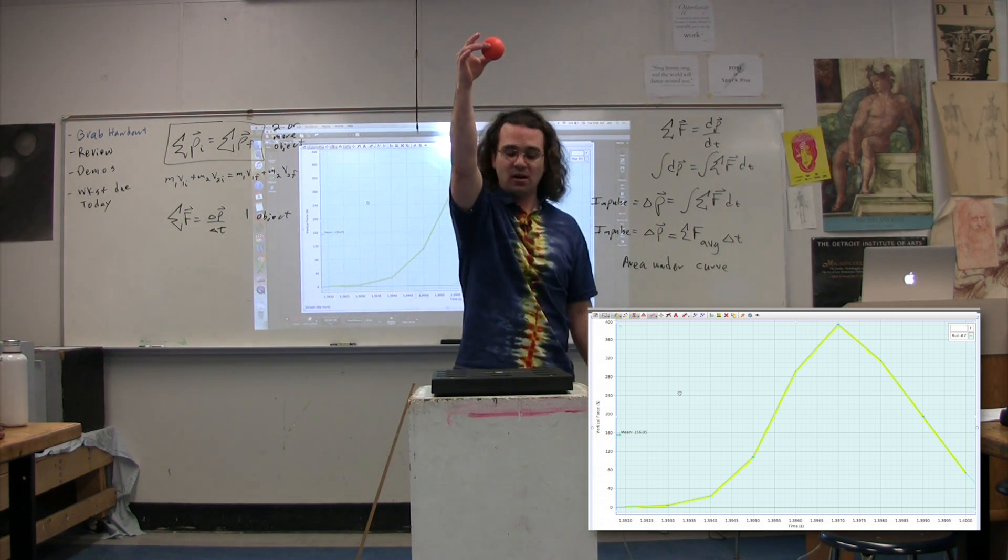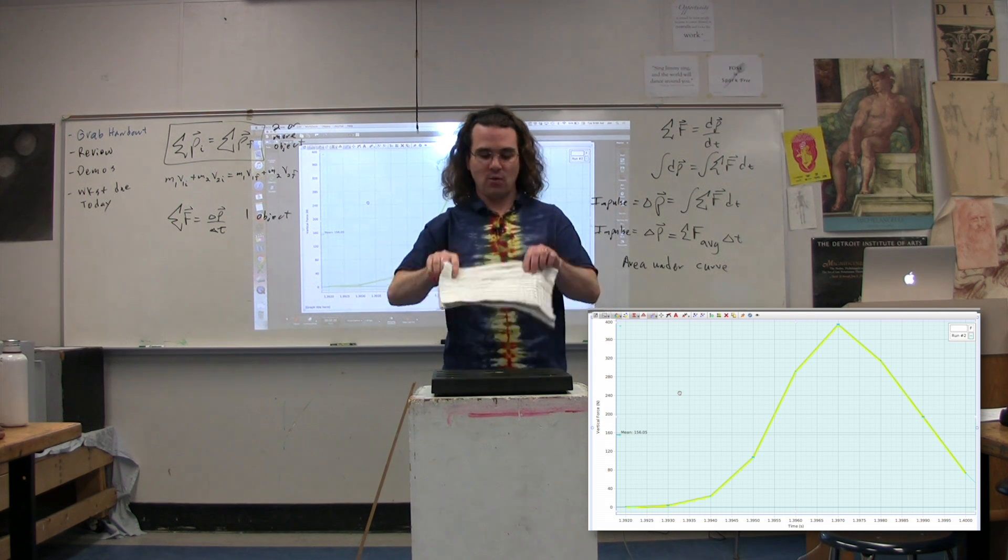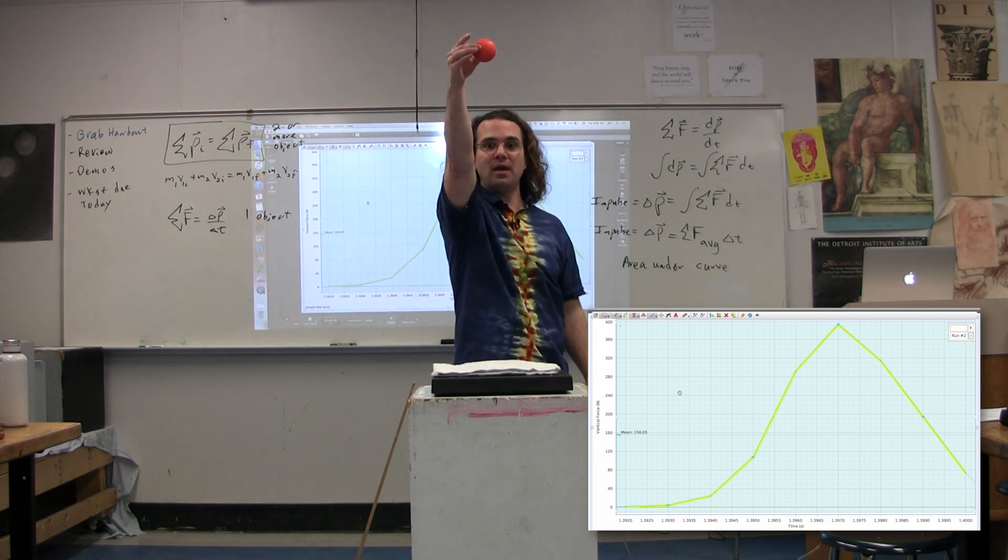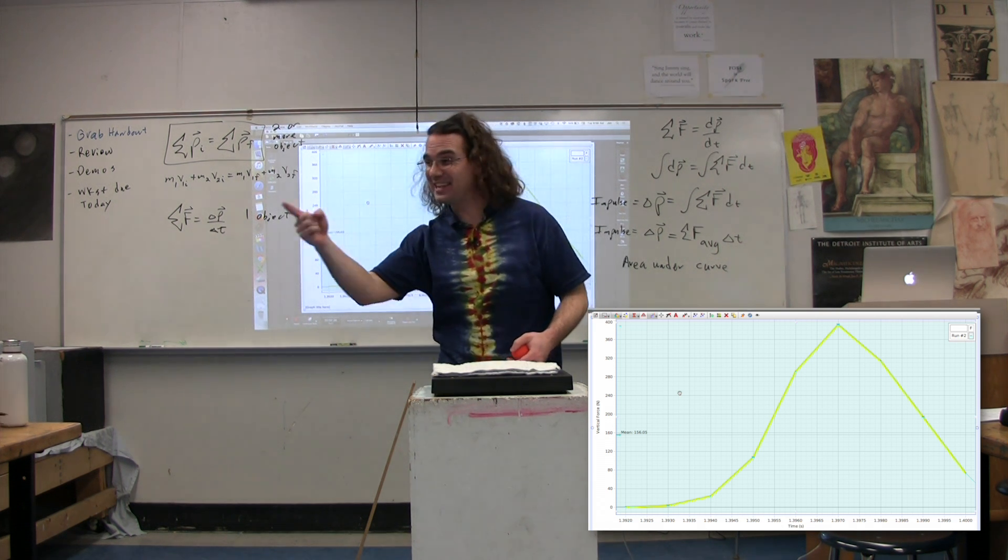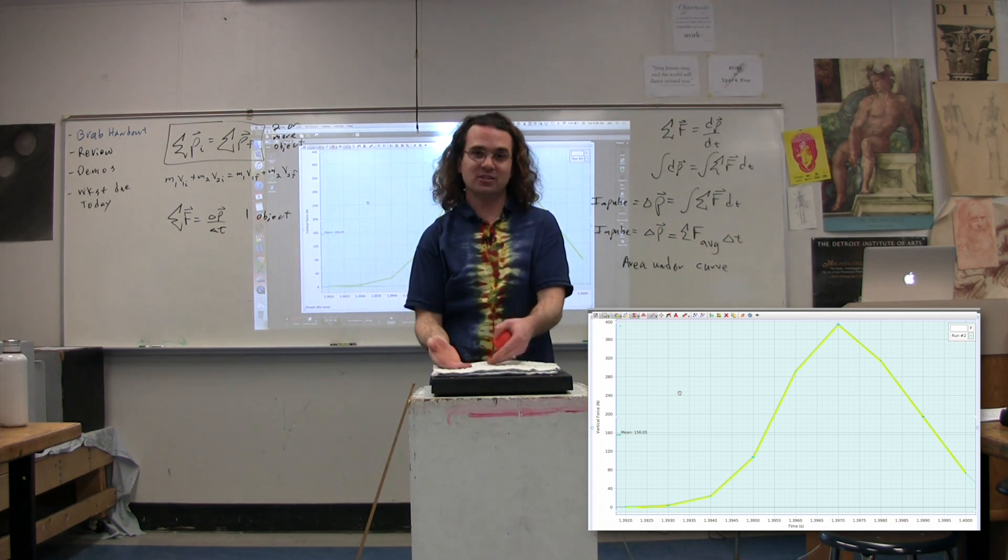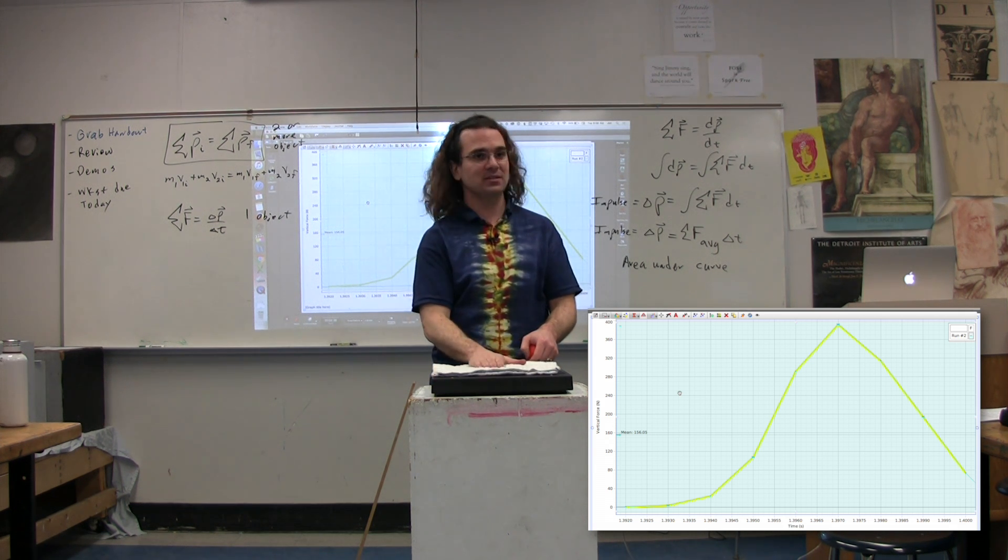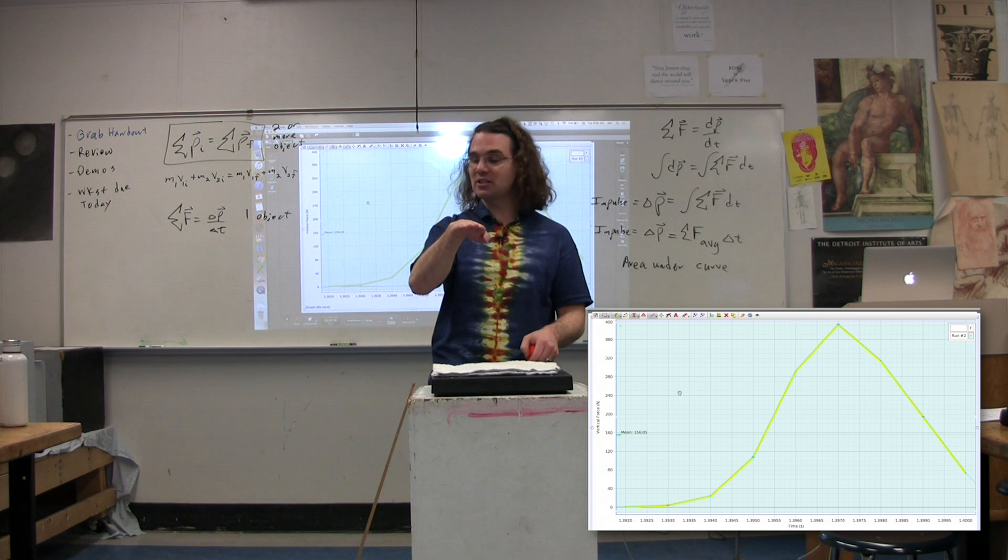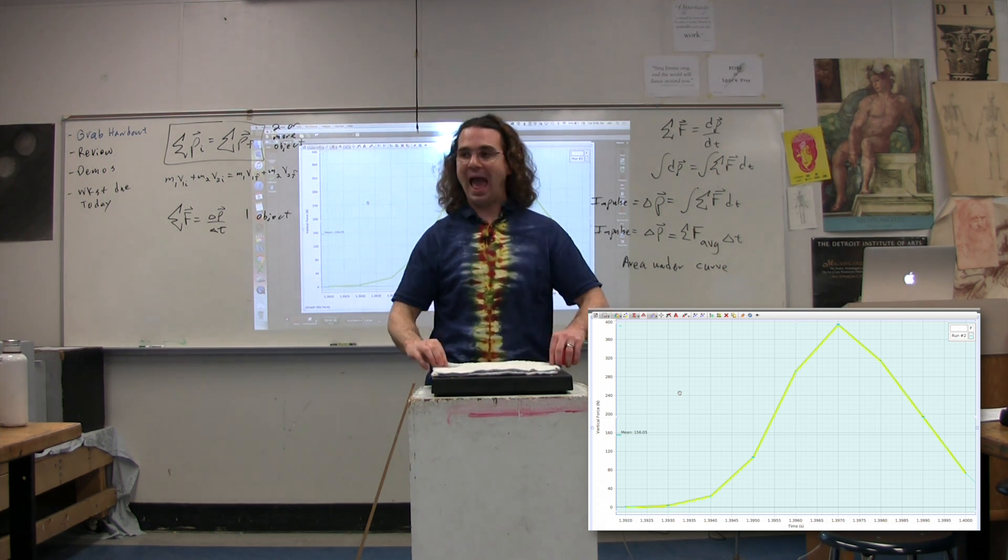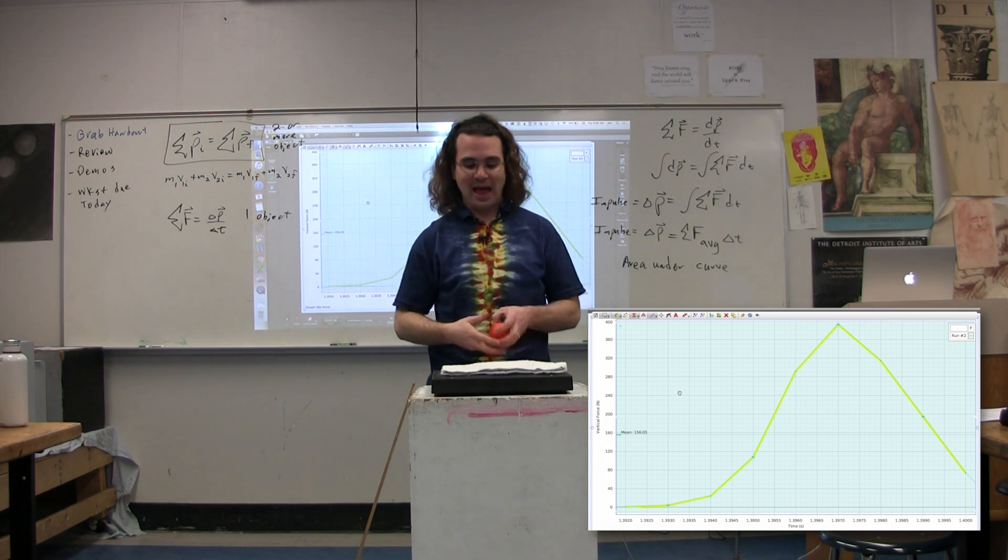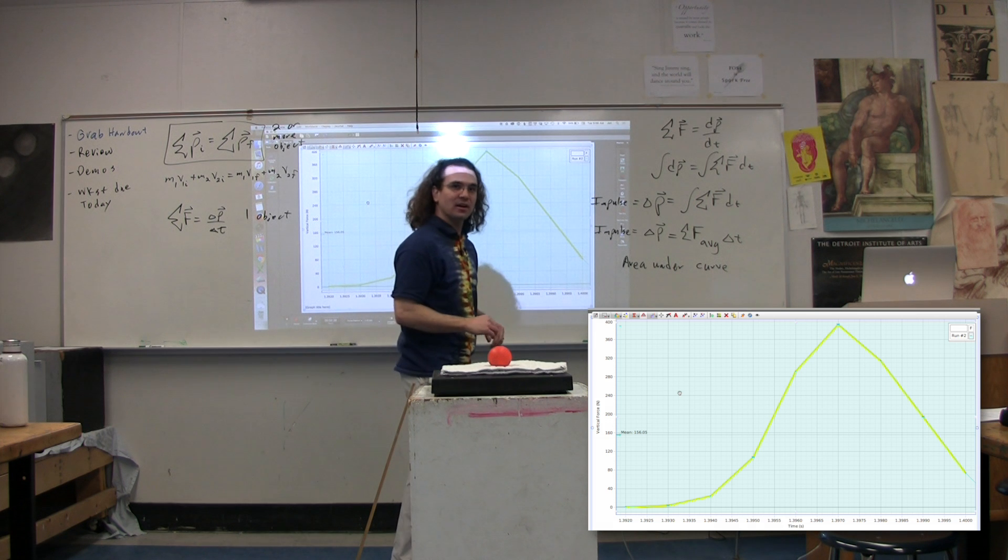So notice the final velocity after the collision, the velocity as it moves up after the collision with the helmet is less. We know it's less because it goes to a lower height. So what we've done by adding this is we actually decrease the impulse. We decrease the area under the curve and we can actually show that.